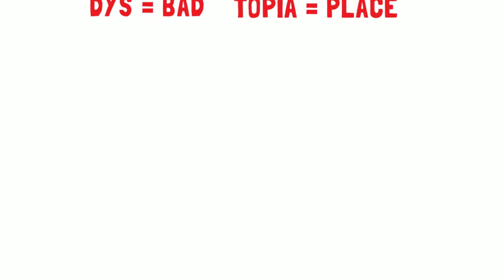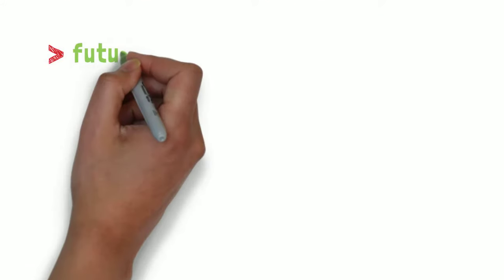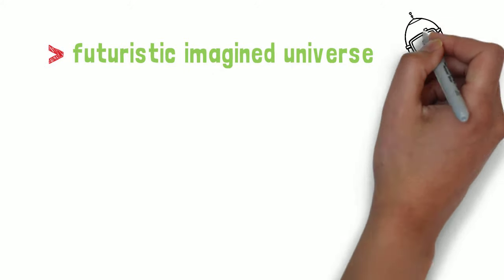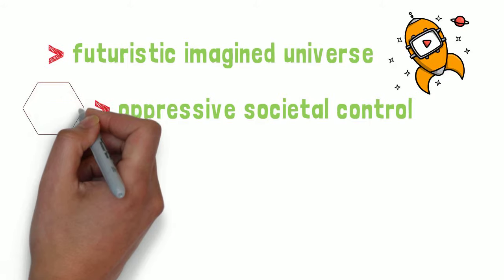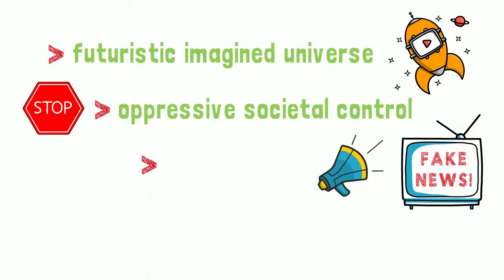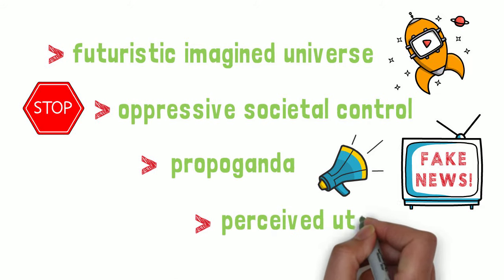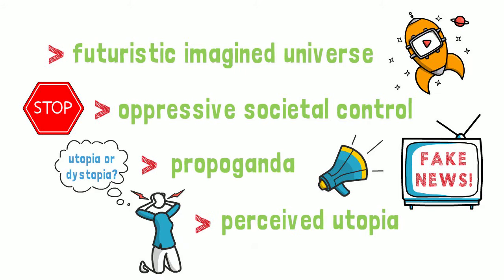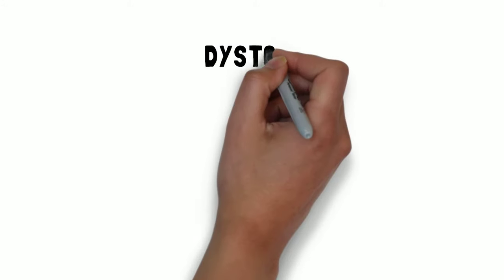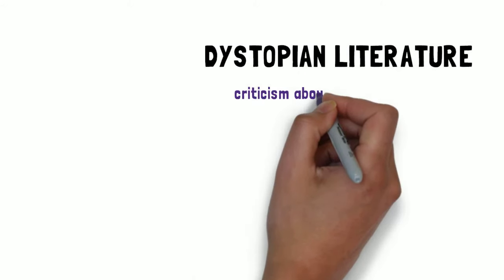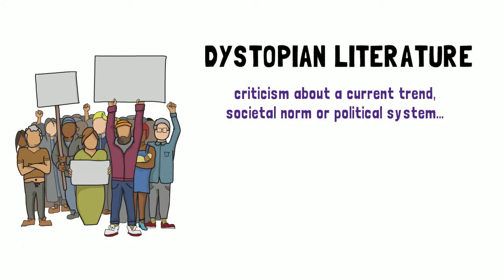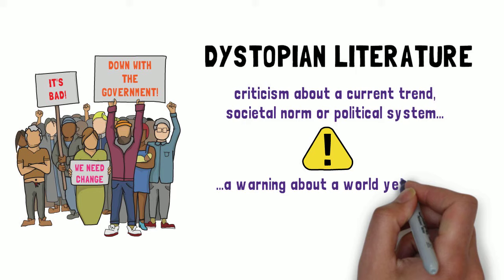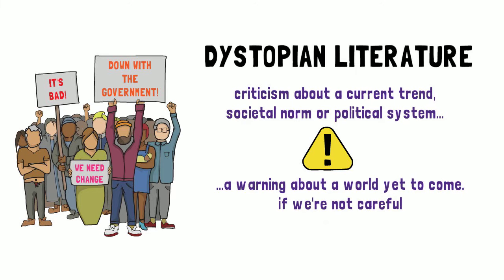In literature, a dystopia is usually a futuristic, imagined universe in which there is oppressive societal control. Often, the people who live in the dystopian society are controlled by propaganda. They might think they're living in a perfect society or utopia. Dystopias in literature may be a criticism about a current trend, societal norm, or political system, or it could be a warning about a world yet to come, if we're not careful.